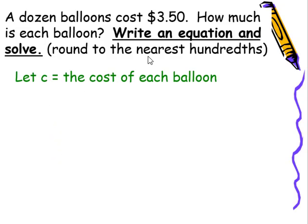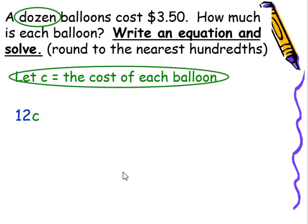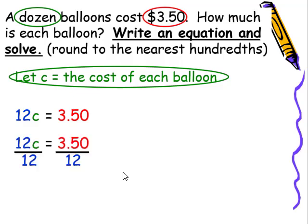Since I know a dozen is 12, I know I'm going to have 12 times the cost of each balloon is going to give me the total cost. To solve this now, all I have to do is divide both sides by the coefficient of 12. The 12s will cancel, leaving me with c. And now I just have to divide $3.50 by 12.